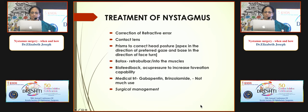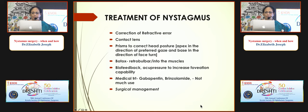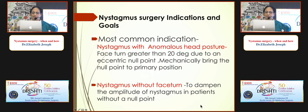Treatment begins with correcting refractive error. Contact lenses are superior to spectacles in nystagmus because as the eye moves, the contact lens stays well centered, whereas with spectacles the visual and optical axes do not correlate. A small abnormal head posture can be corrected with prisms up to 15 degrees. Botulinum toxin has a role but requires repeated injections, making it impractical. Biofeedback, acupressure, and medical treatment are not effective.